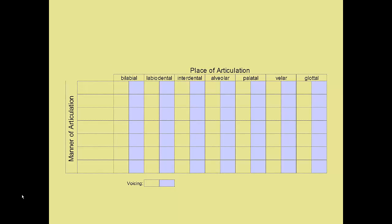Our first column indicates the lips as the place where these consonants are produced and is labeled bilabial. Labiodentals are next — this is where the lips and teeth meet to form sounds. Next is interdental, which involves placing the tongue on the upper teeth. Next is alveolar. The alveolar ridge is what you can feel with your tongue just behind your teeth but before the palate.